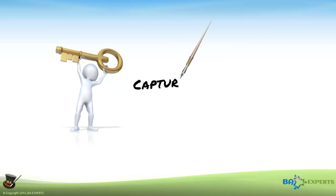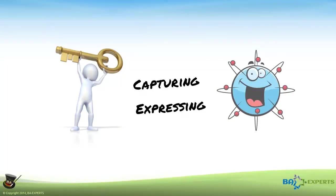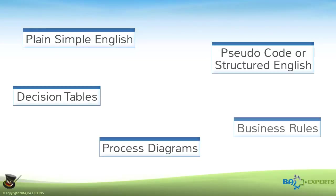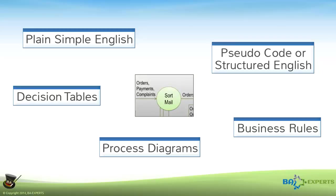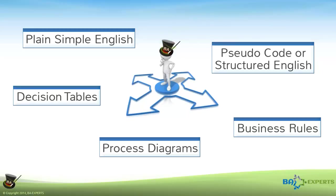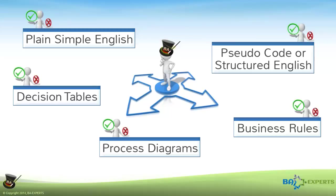The key here is that you have many options for capturing and expressing what a functional primitive does, and these options far exceed the scope of this publication. Each of the presented examples contains the same information about the sort mail process. As the one wearing the BA hat, you have to pick the mode of presentation that is suitable for the process it defines and that you and your target audience both understand.